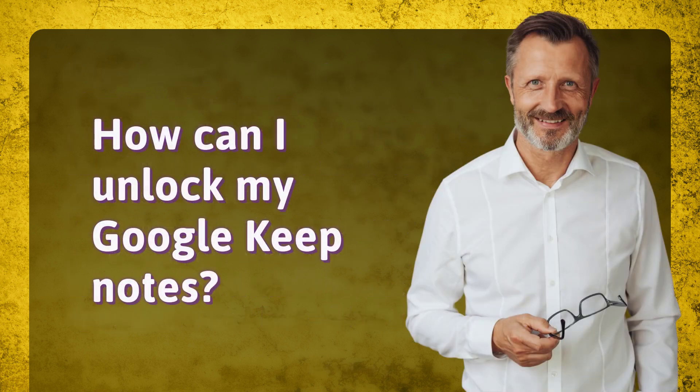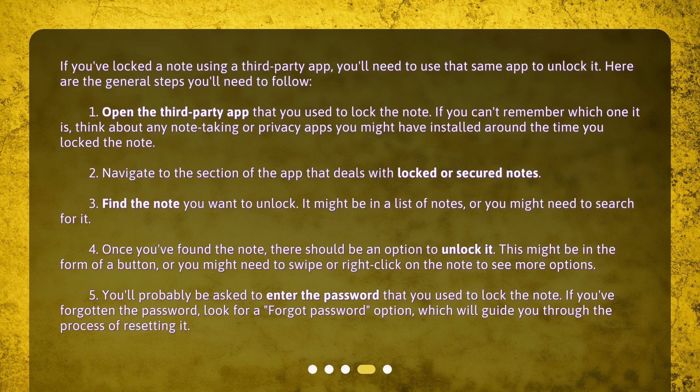How can I unlock my Google Keep notes? If you've locked a note using a third-party app, you'll need to use that same app to unlock it. Here are the general steps you'll need to follow. Step 1: Open the third-party app that you use to lock the note. If you can't remember which one it is, think about any note-taking or privacy apps you might have installed around the time you locked the note.